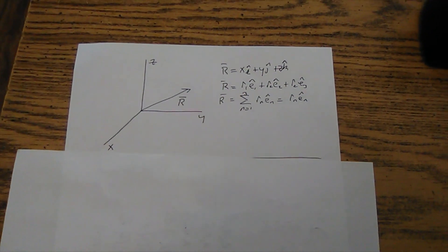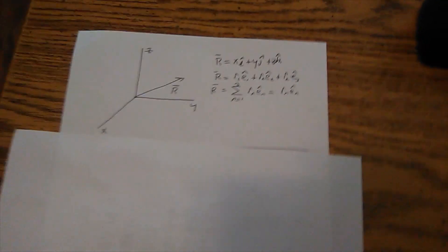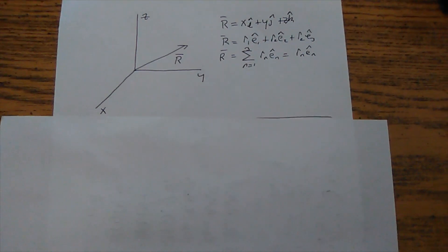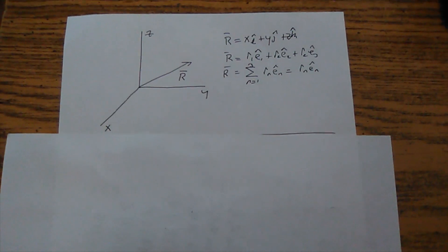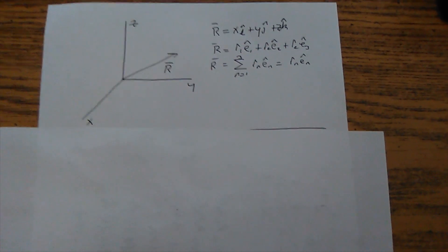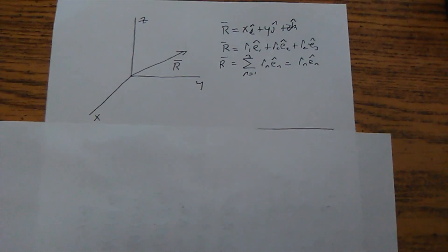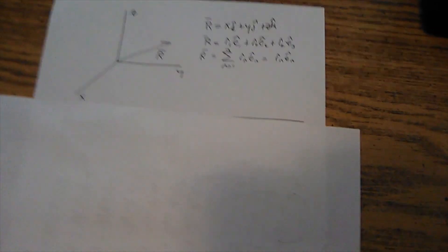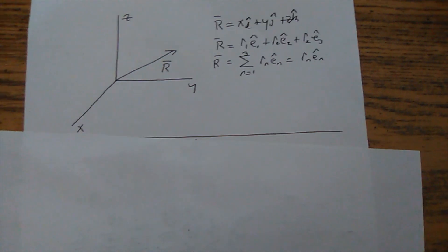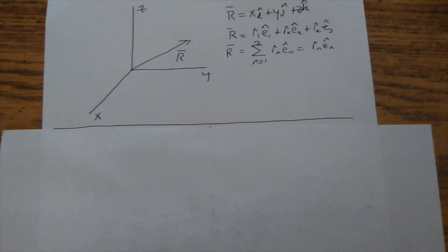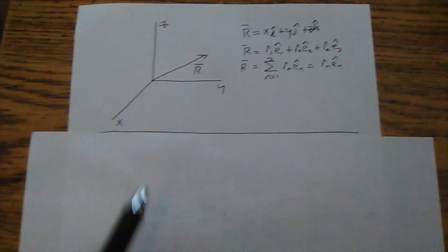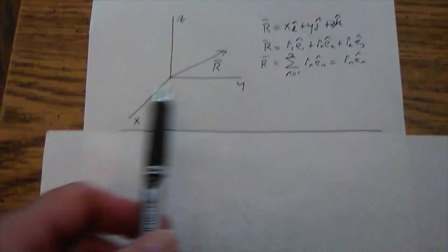Hello, relativity friends. I've run into in my studies of general relativity a notation they use that's quite different and it's very easy to get confused. I believe they use it because they have to write so many terms — I guess they're just lazy. It's called Einstein's summation notation. Here's a real brief example.